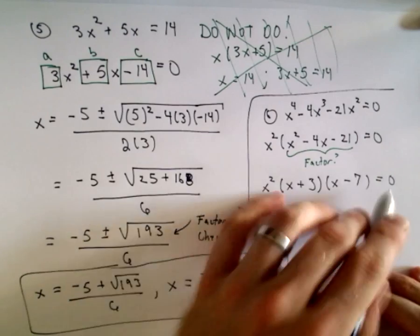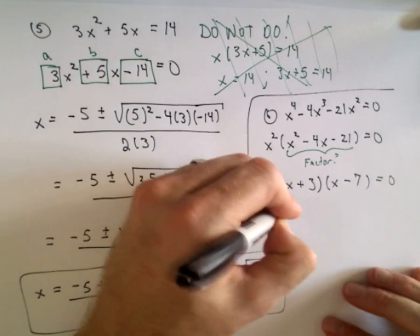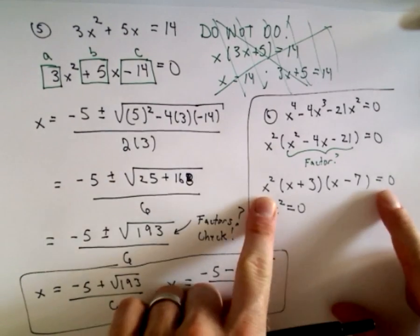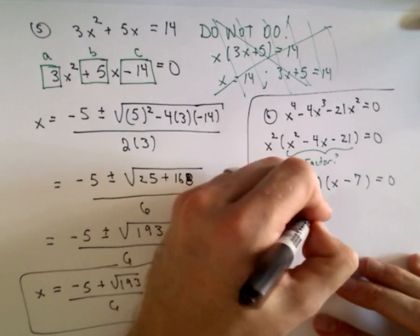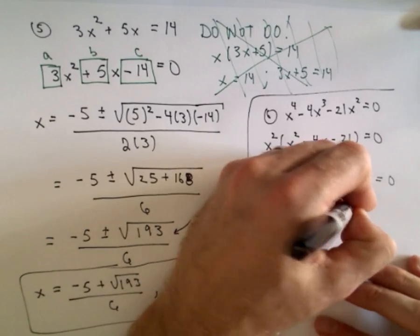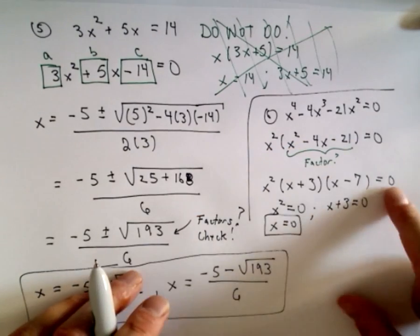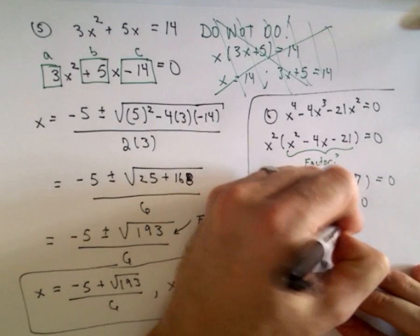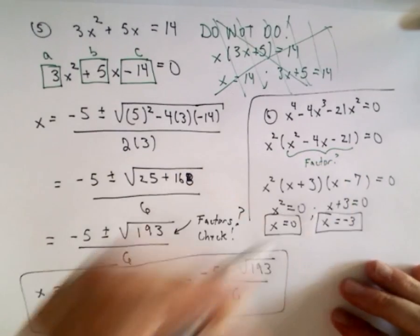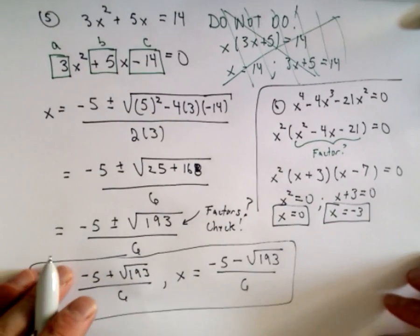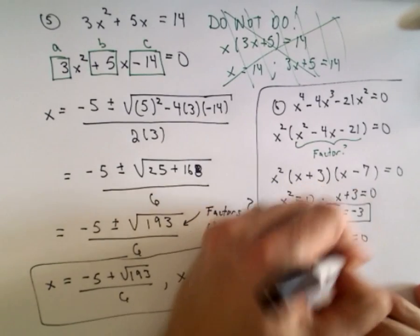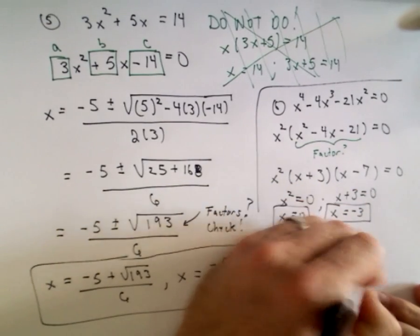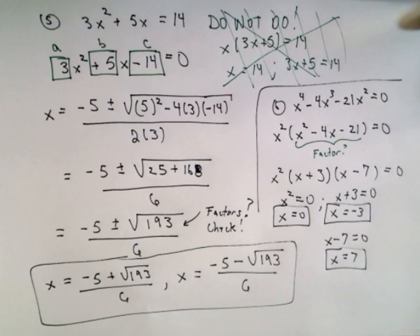Now we set each factor equal to zero. x squared equals 0 gives us x equals 0. x plus 3 equals 0 gives us x equals negative 3. And x minus 7 equals 0 gives us x equals positive 7. So those are all three solutions for problem 6.